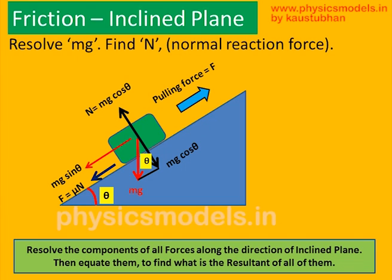With that triangle established, it becomes easy to resolve the forces. The component along the perpendicular to the plane is mg cos theta — no force can be greater than mg itself, so this makes sense. The component perpendicular to the inclined surface is mg sin theta, shown as a red arrow from the center of the block. The frictional force F equals mu times the normal reaction N, which equals mg cos theta.